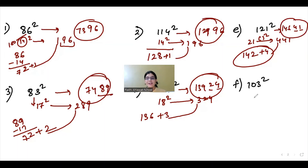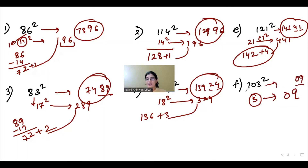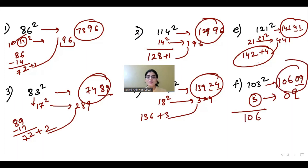In the case of 103: the difference is 3. Three squared is 9, but it is a single digit, so put a 0 before it to make it 09. Since 103 is greater than 100, we do 103 plus 3 equals 106. So your answer is 10609.